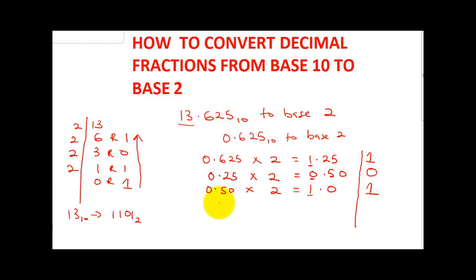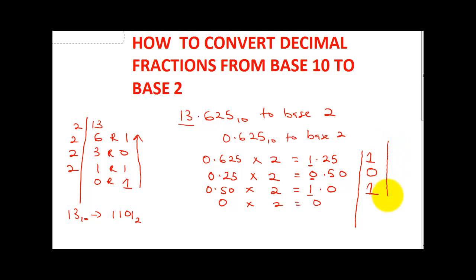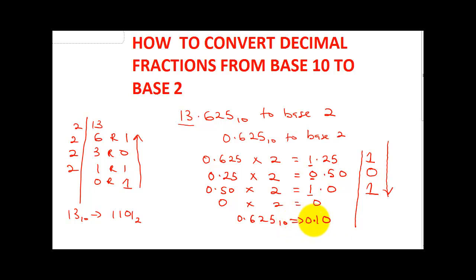0.50 multiplied by 2 gives me 1.0, so I'll take the 1. Now notice if I take 0 here — 0 times whatever I'm multiplying it by gives me 0 — so this is where I stop. The difference is that you count from the top down.